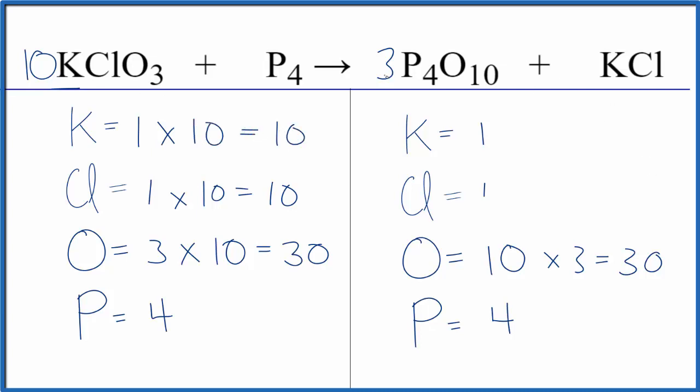Over here we have the 3 times 10. 3 times 10 gives us 30. 3 times the 4 for the phosphorus that gives us 12.